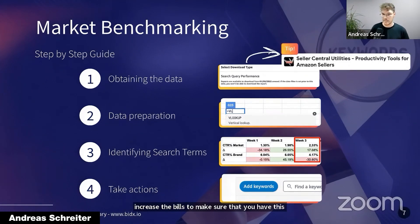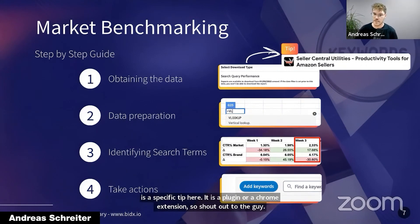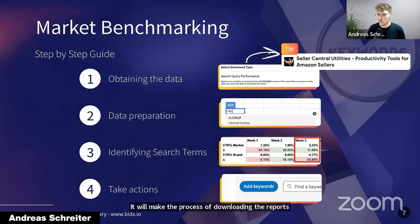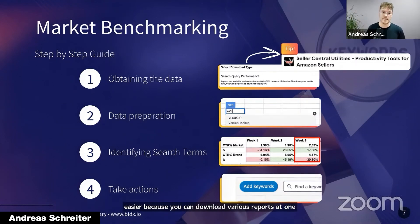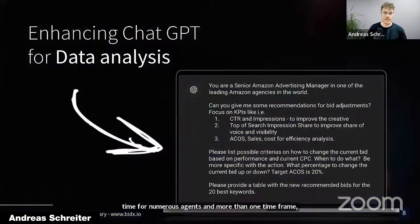There is a specific tip here — a Chrome extension called Seller Central Utilities. Shout out to the guys that developed it. It makes the process of downloading the reports much easier because you can download various reports at one time for numerous ASINs and more than one timeframe. I definitely encourage you to use that whenever you are downloading the reports.